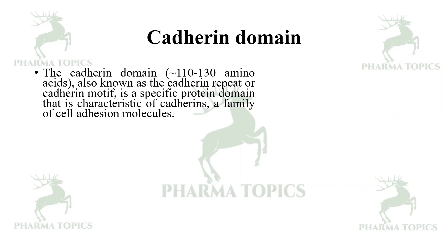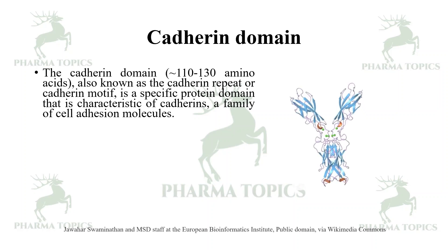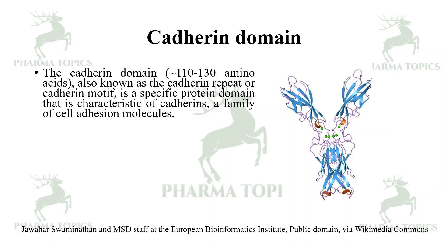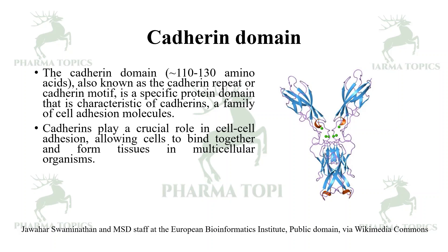The next is the cadherin domain, which has approximately 110 to 130 amino acids. Also known as cadherin repeat or cadherin motif, it is a specific protein domain characteristic to cadherins. Cadherins are basically cell adhesion molecules. Cadherins play a crucial role in cell-to-cell adhesion, allowing cells to bind together and form tissues in multicellular organisms.